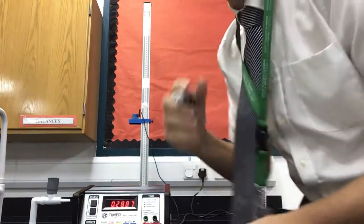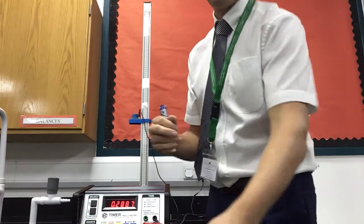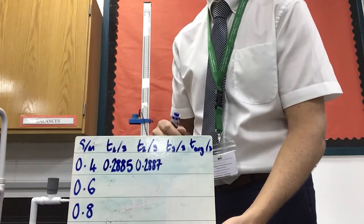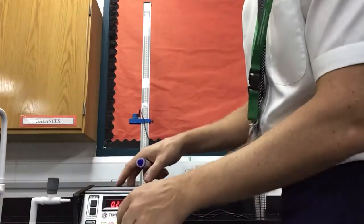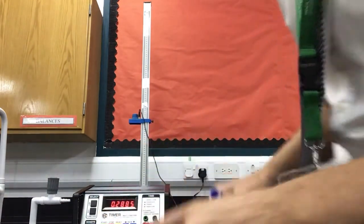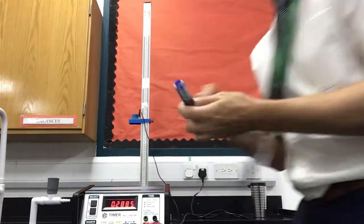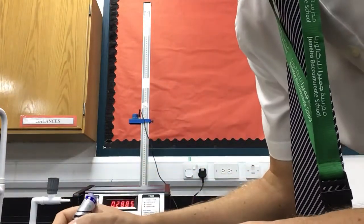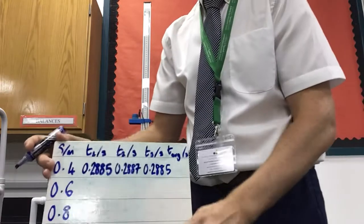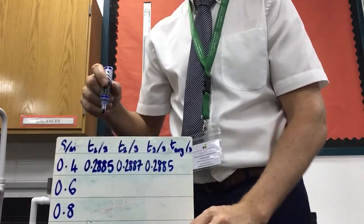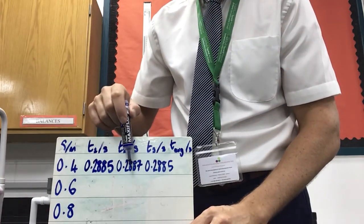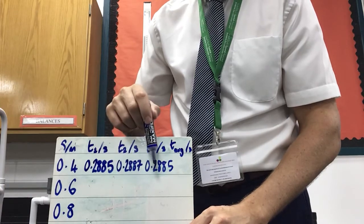For those of you in class that have done the experiment yourselves, you'll notice that my data, 0.2885 and 0.2887, is much closer together than anything you would get. Hence why we use this equipment. So reset, 0.2885. So now we have the three readings for 0.4: 0.2885, 0.2887, 0.2885.